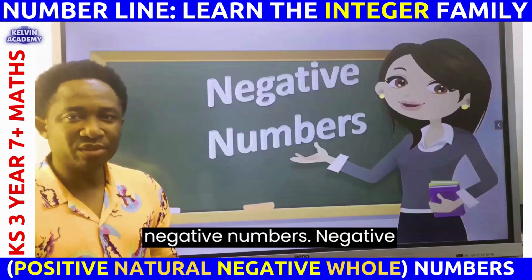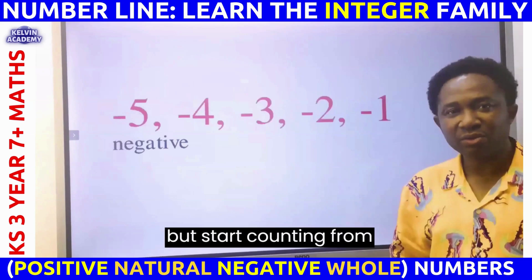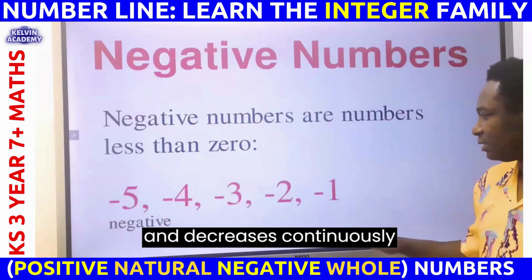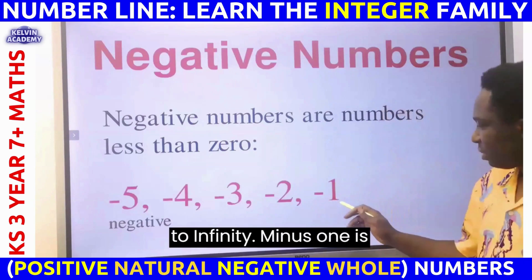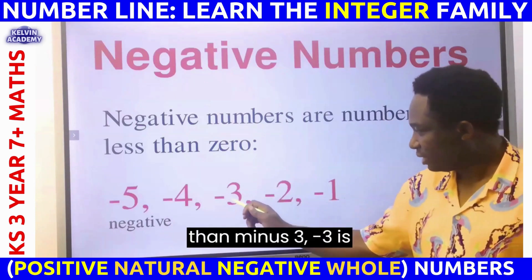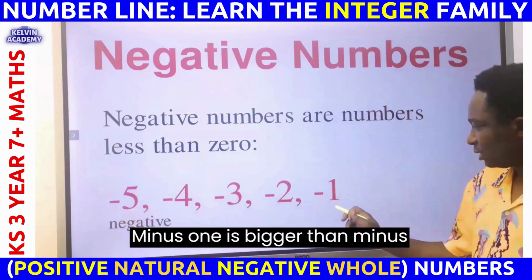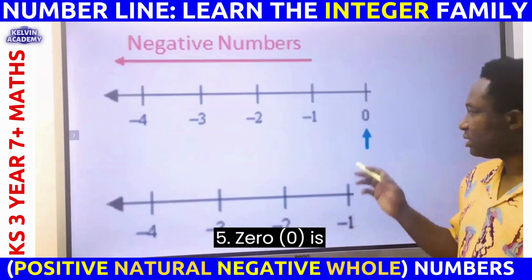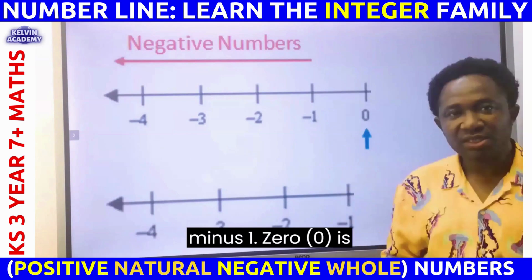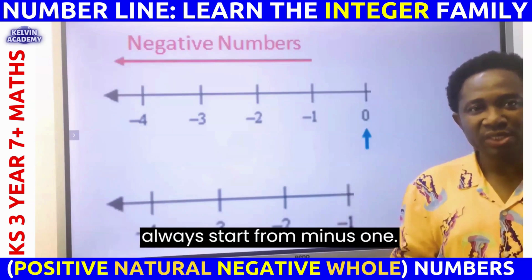Next, let's consider negative numbers. Negative numbers, like positive numbers, have a zero reference point but start counting from minus one. Negative numbers are numbers that are less than zero and decrease continuously to infinity. Minus one is greater than minus two, minus two is greater than minus three, minus three is greater than minus four, and minus one is greater than minus five. Zero is excluded from negative numbers — always start listing negative numbers from minus one.